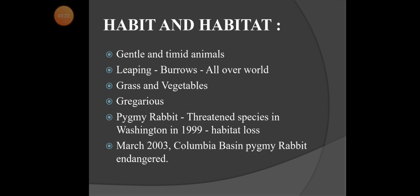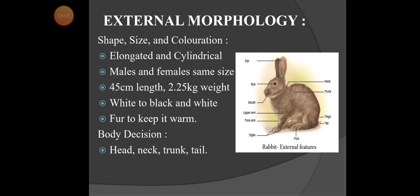In March 2003, the Columbia Basin pygmy rabbit was listed as an endangered species. Endangered means the species is gradually being destroyed but still exists in some places. Extinct means completely destroyed — for example, the crocodile is endangered but the dinosaur is extinct. So the rabbit is also moving toward endangerment, and we should protect it.